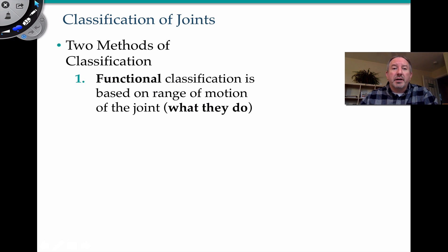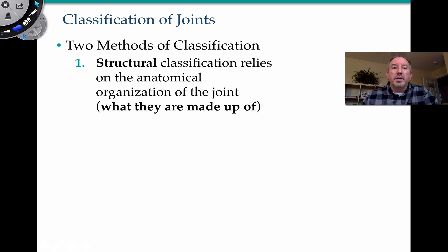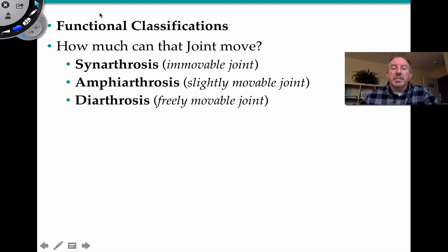We usually like to classify our joints in two ways. Functionally, which is based on the range of motion of the joint — basically, what does the joint do? And then structurally, what is the joint made up of anatomically? Functionally, there are three basic criteria: there are immovable joints, slightly movable ones, and freely movable ones. Immovable are synarthrosis, amphiarthrosis, and diarthrosis — so immovable, slightly movable, and freely movable.